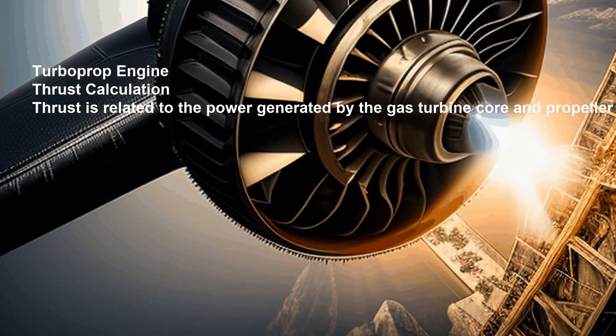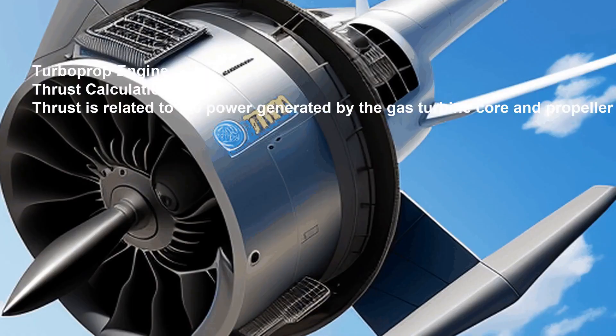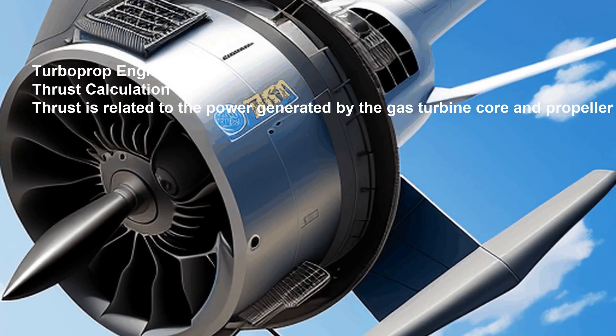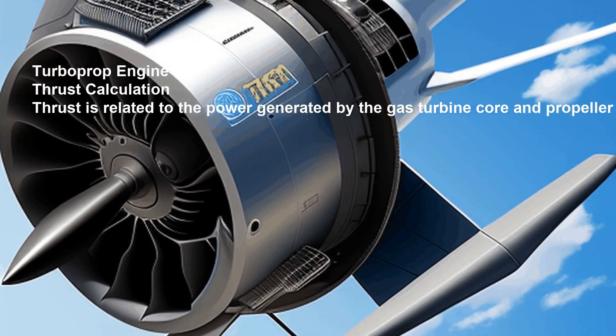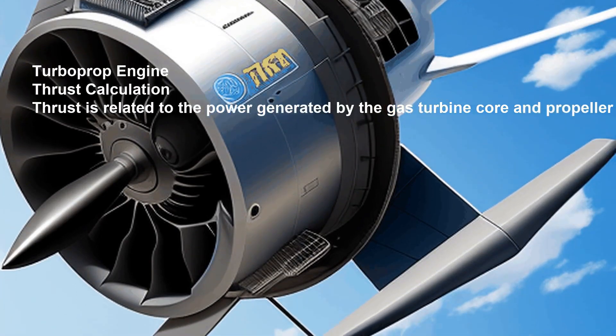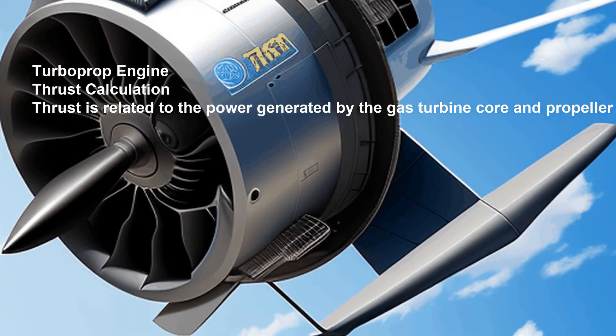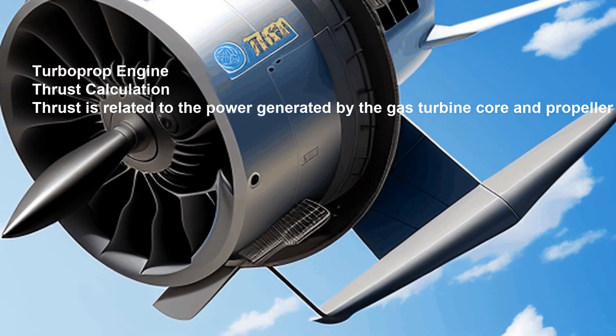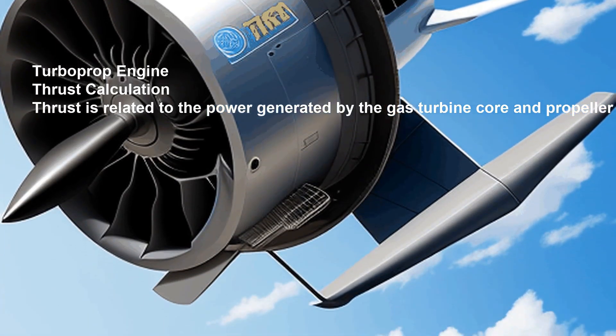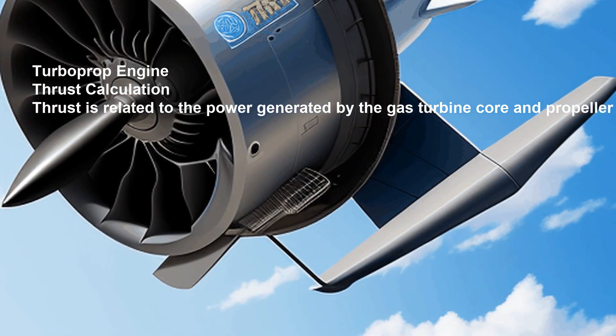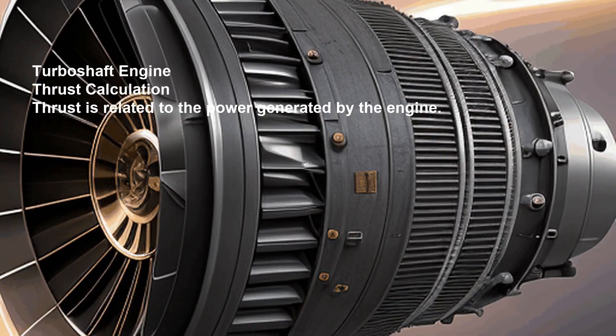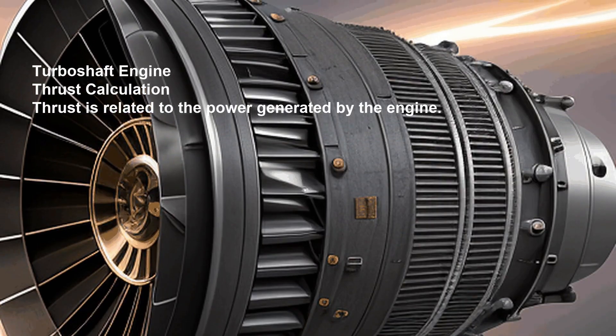Turboprop engines are used in smaller regional and commuter aircraft. They use a gas turbine core to drive a propeller, making them efficient at lower speeds and altitudes, suitable for shorter flights.